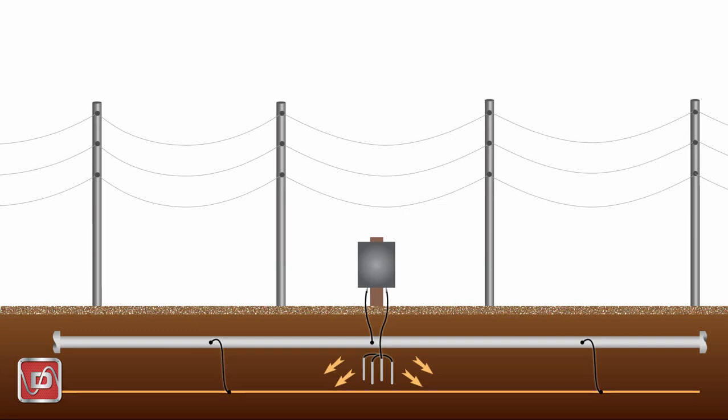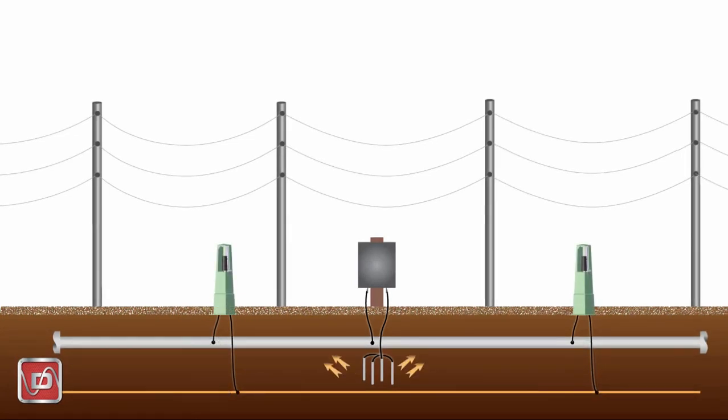This is where the decoupler comes in. We can block the flow of CP current while simultaneously bonding the two structures for safety. Let's install a decoupler in the ground path and see what happens.